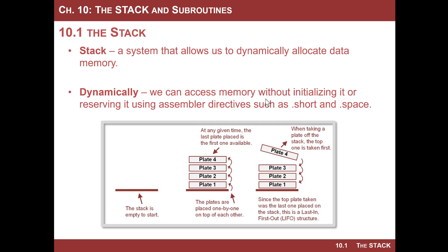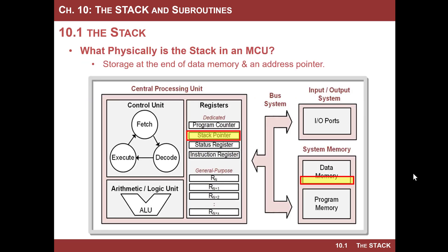You put information onto the stack, it sits there, and when you're ready, you yank it off. When we get to a higher-level language like C, if you define a variable like int i or int var, the compiler will make a decision based on your program structure as to where it's going to create that variable. Many times that variable is put into the stack. The other options are a CPU register, or you could define a spot in memory using .short or .space.